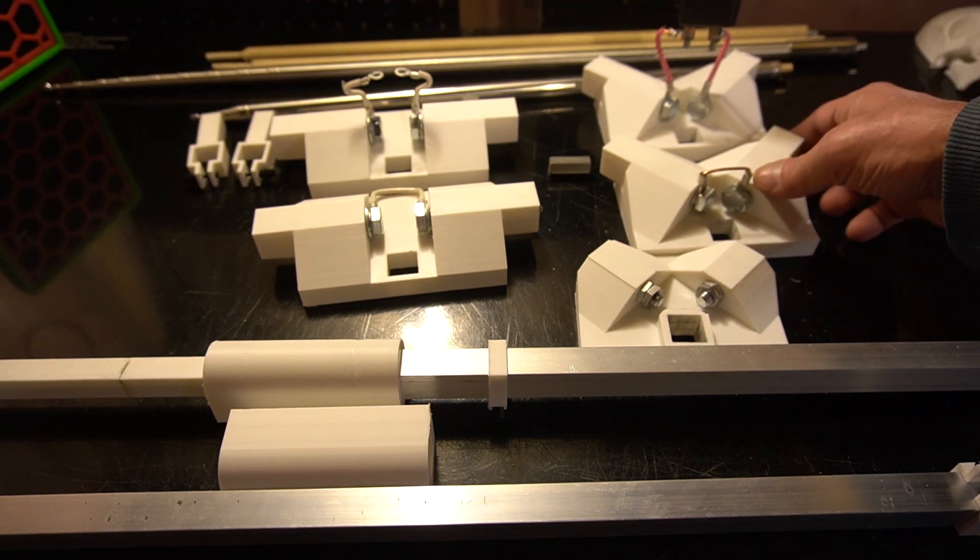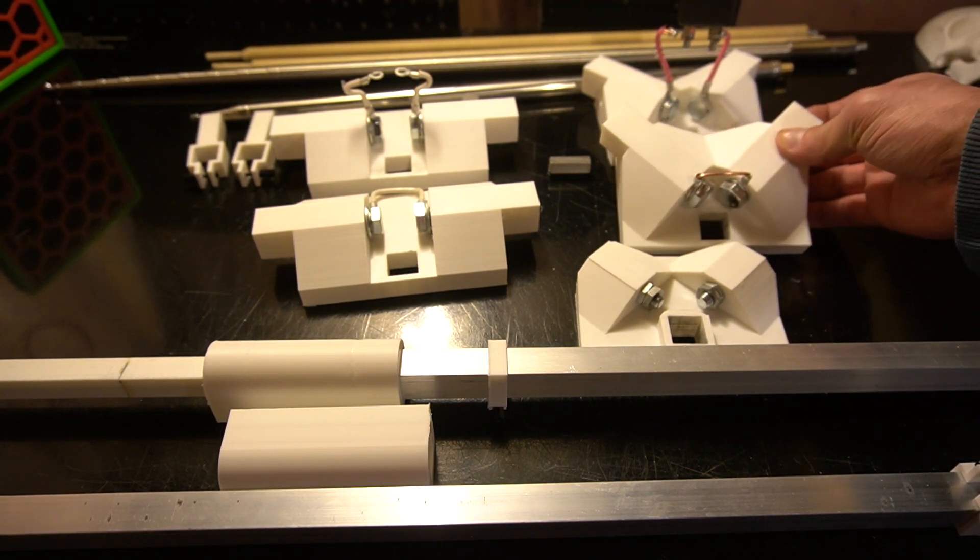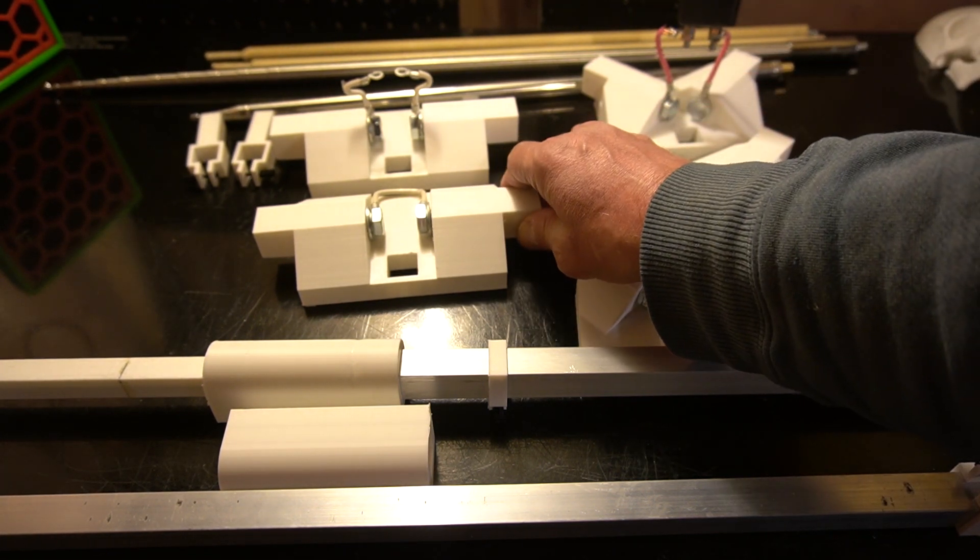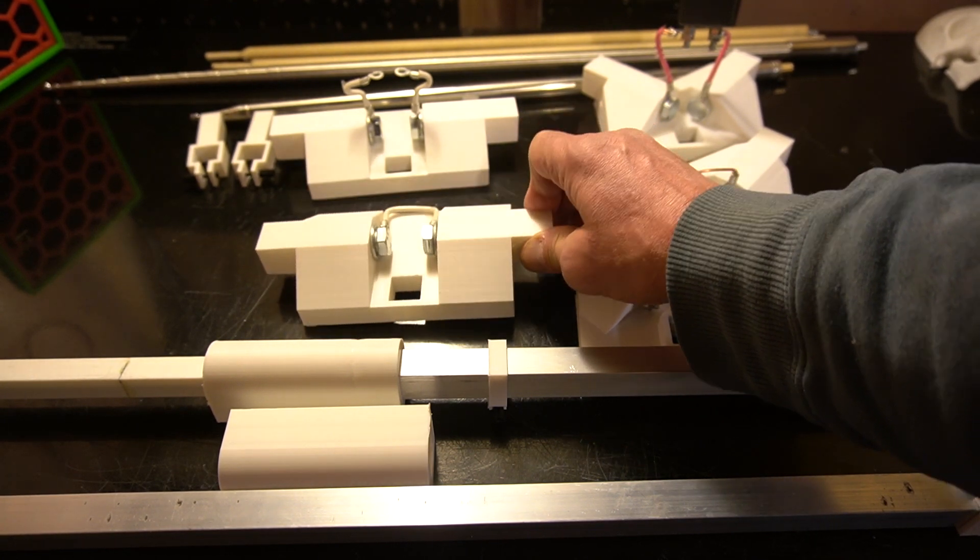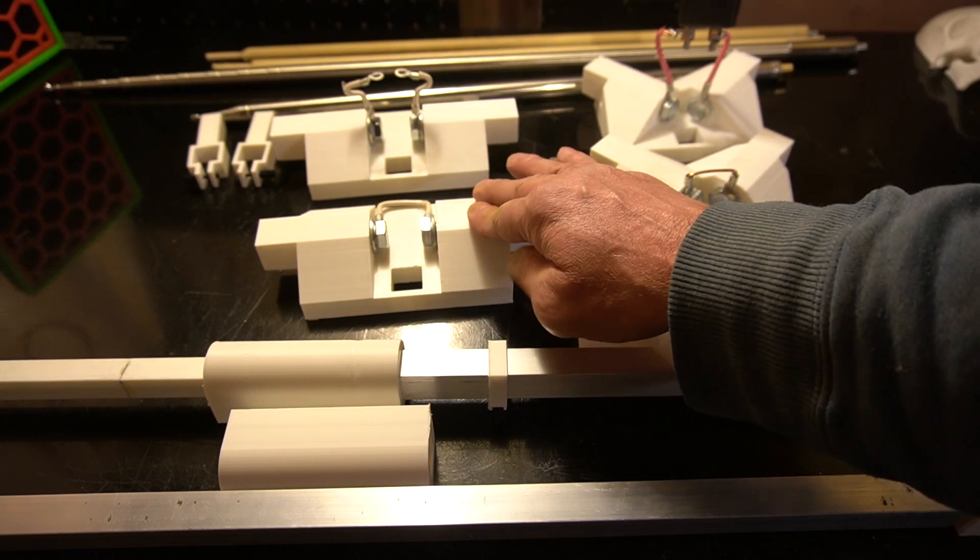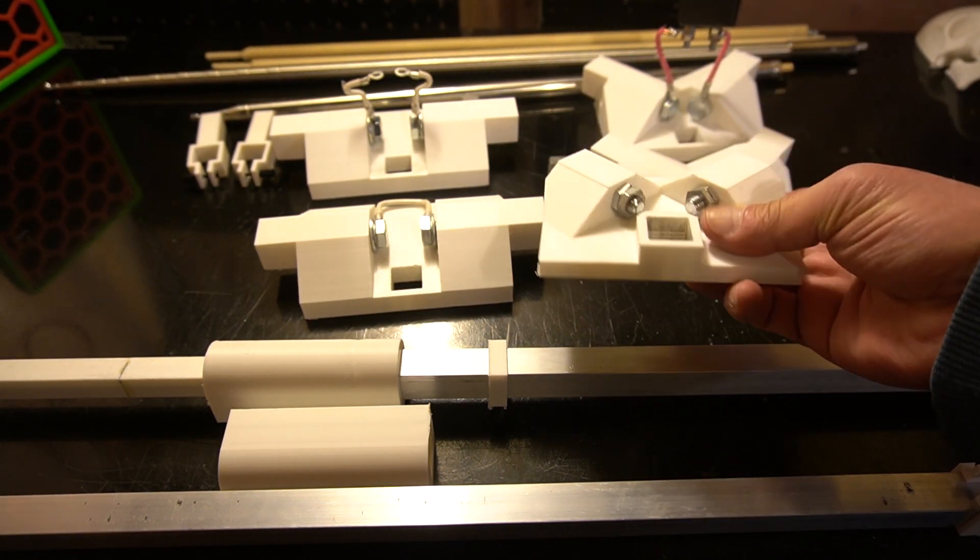Over here we have the V configuration hubs. This one here is the reflector and the driven element. And this week I completed the horizontal configuration hubs. So we have the driven element and the reflector. And over here it was the very first hub that I printed.